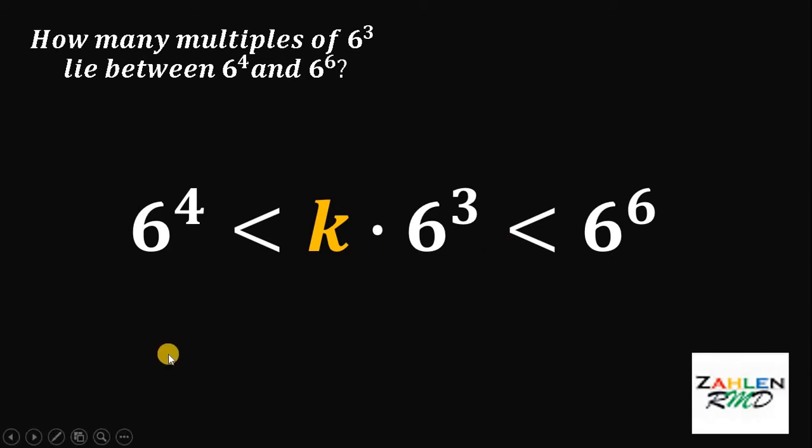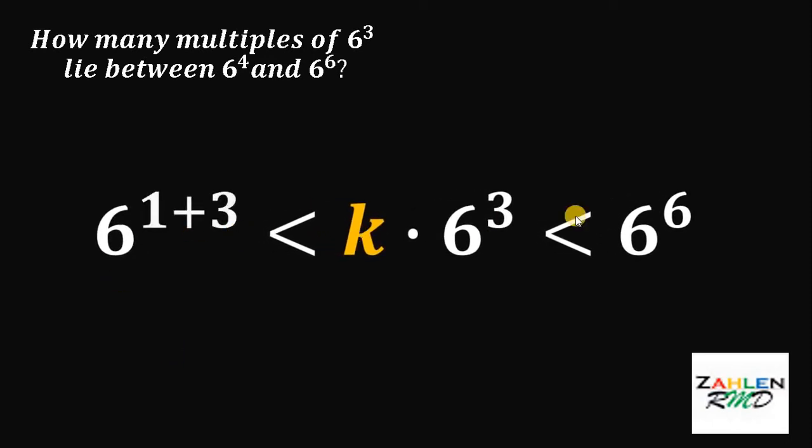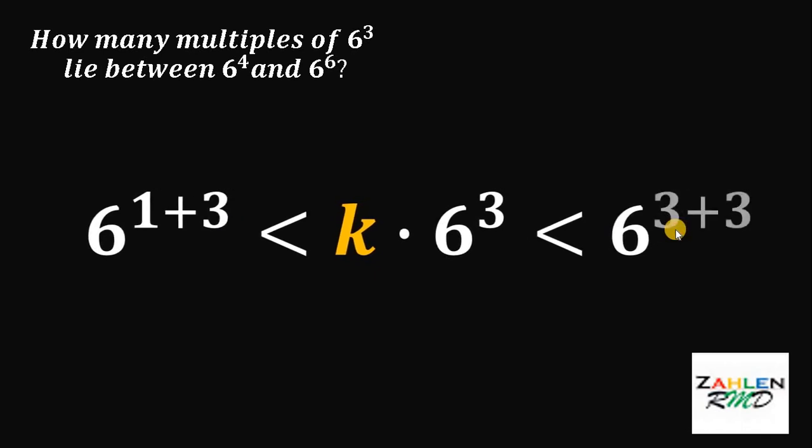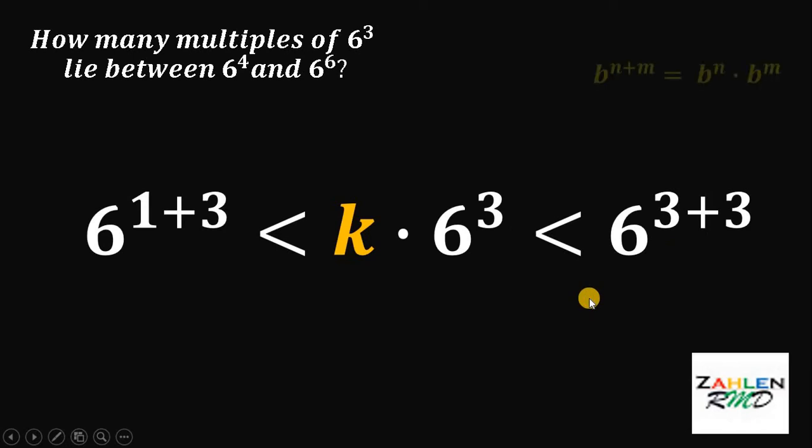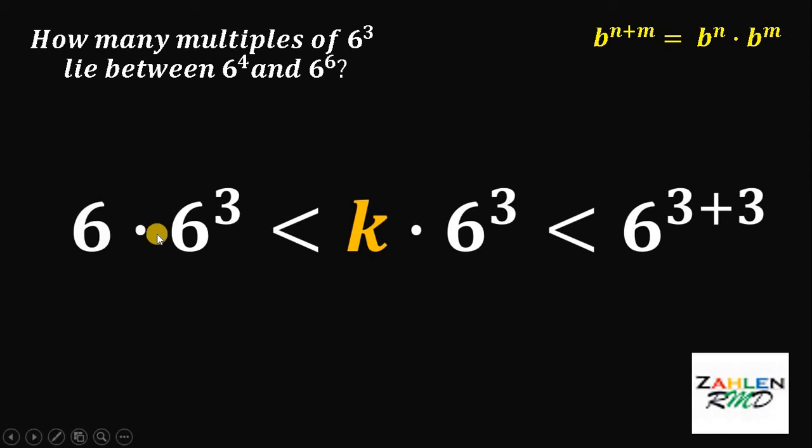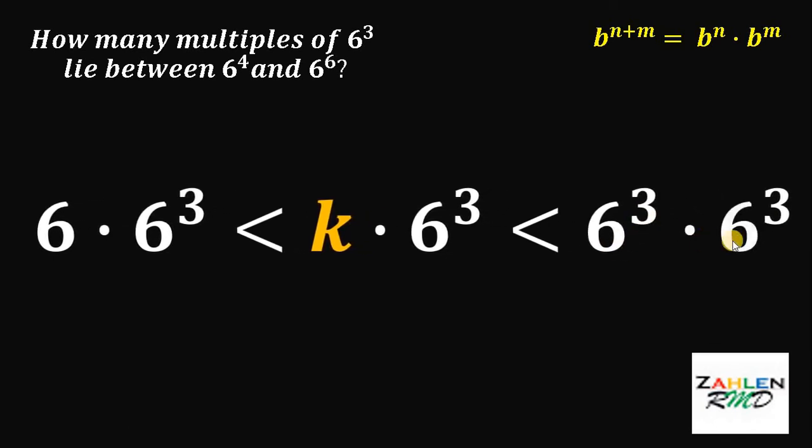To solve for the range of k, we're going to notice that 4 can be written as 1 plus 3 and 6 can be written as 3 plus 3. Why? Because we will use some laws of exponent. If we have b raised to n plus m, it is equal to b raised to n times b raised to the power of m. Therefore, 6 raised to 1 plus 3 can be written as 6 raised to 1 times 6 cube, and 6 raised to 3 plus 3 can be written as 6 cube times 6 cube.